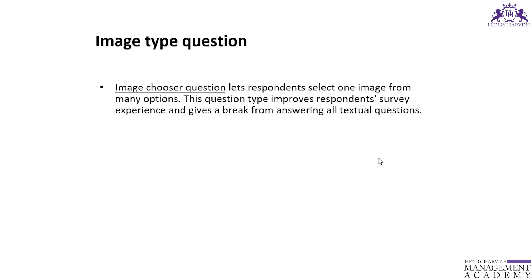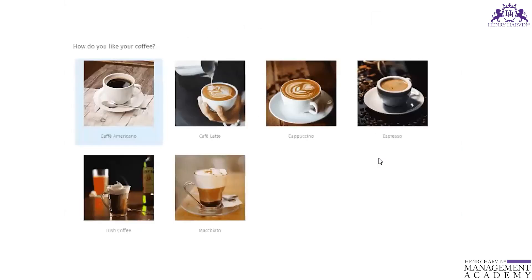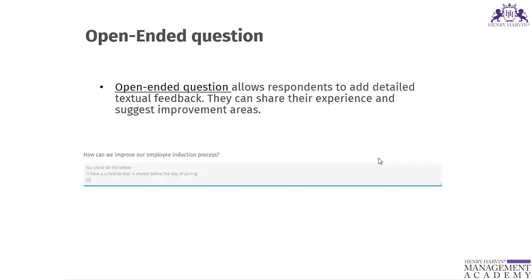There is also an image type question — because one image is equal to a thousand words. People are attracted to images, so they are highly likely to give a response when an image is present. And then there is the open-ended question.